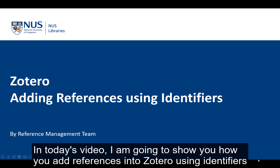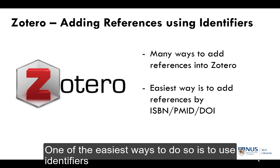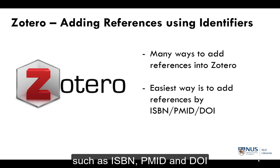In today's video, I am going to show you how you can add references into Zotero using identifiers. There are many ways to add references into your Zotero library. One of the easiest ways to do so is to use identifiers such as ISBN, PMID, and DOI.